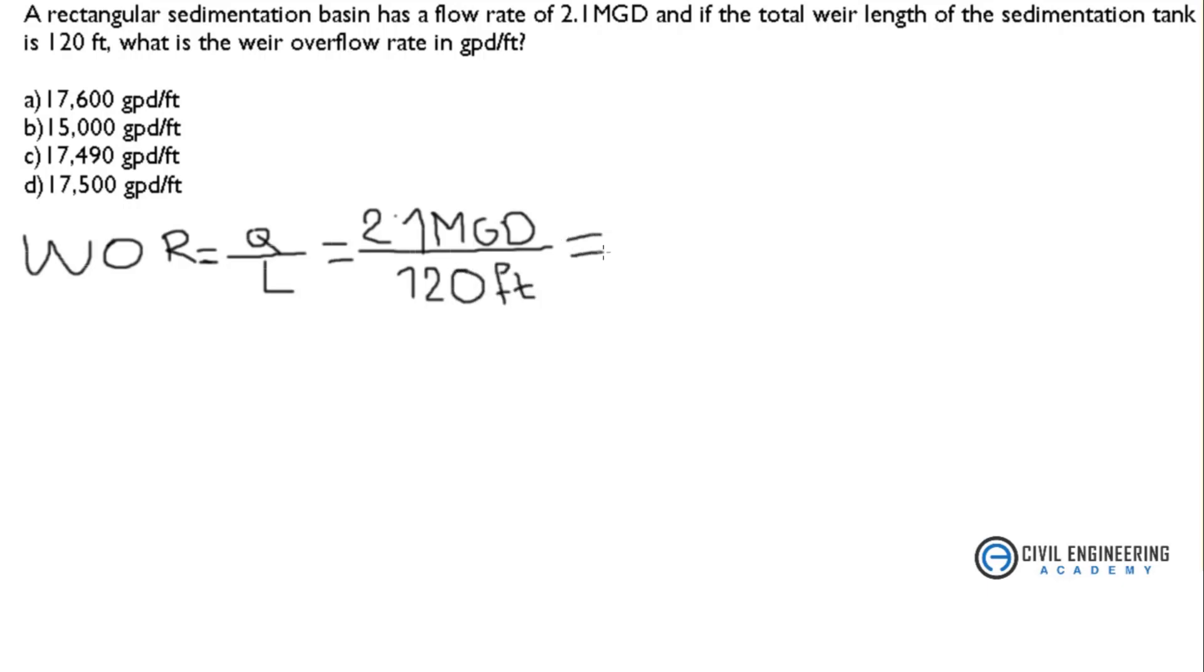Our answer is in gallons per day per feet, so we have to calculate. We have to convert million gallons into gallons. So 2.1 times 10 to the power 6 gallons per day divided by length 120 feet. After calculation, I got the value 17,500 gallons per day per feet.